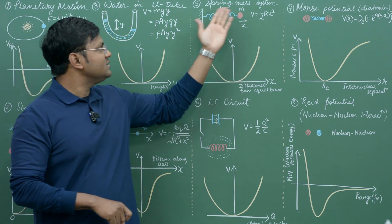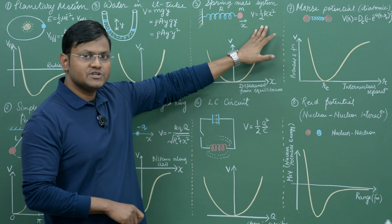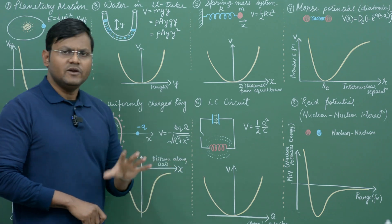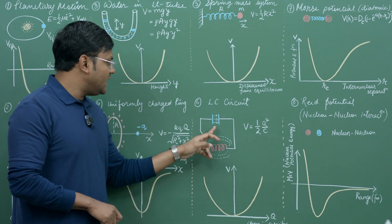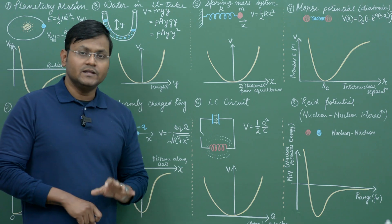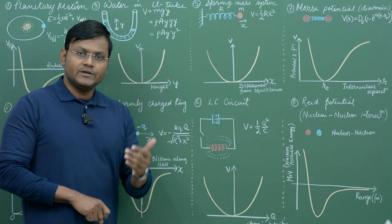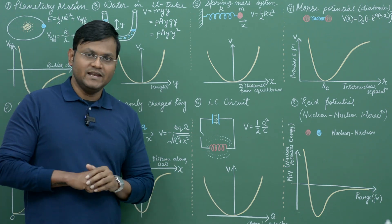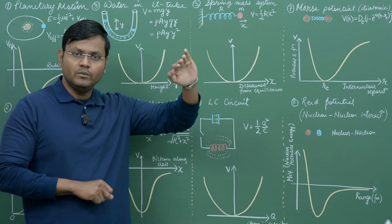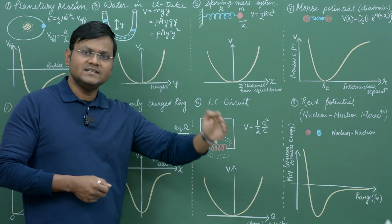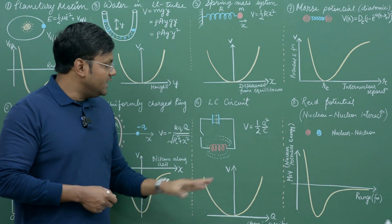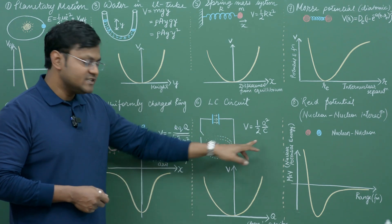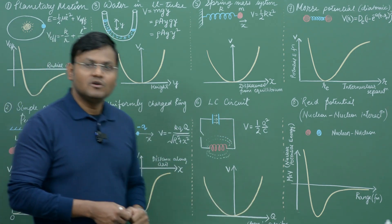Next we have the very common spring-mass system. Its potential energy expression is V equals half kx squared, which is a parabola. Next we have an electronic circuit made up of a capacitor and an inductor. Energy is stored in the capacitor in the form of electrostatic fields and in the inductor in the form of magnetic fields, and this energy keeps oscillating — the capacitor gets charged and discharged repeatedly. The potential energy due to charge in the capacitor has this expression and this graphical representation.